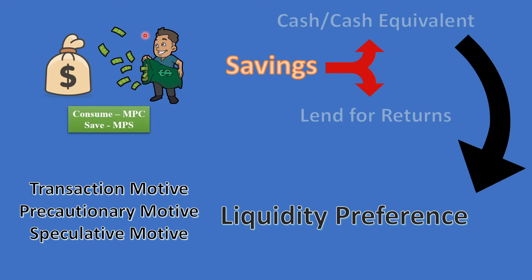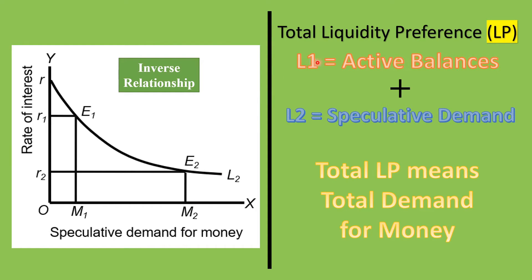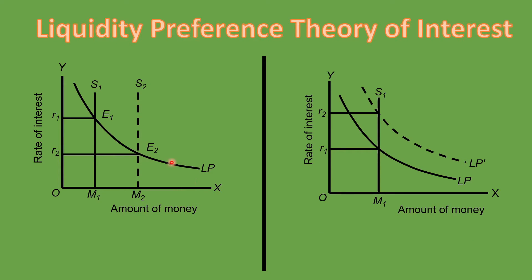The total liquidity preference Lp equals L1 plus L2, and Lp represents the total demand for money. S1 is the supply of money. The demand for money curve Lp is a downward-sloping curve. The transaction motive and precautionary motive together help determine the rate of interest.